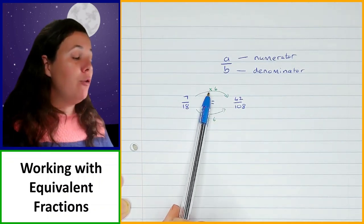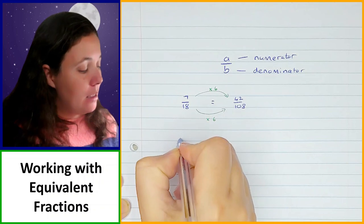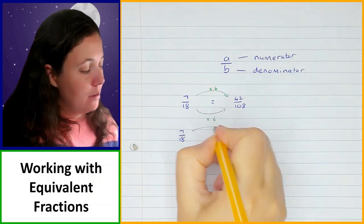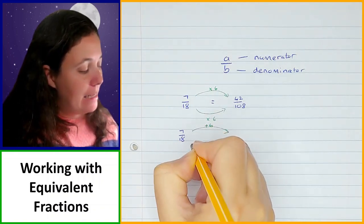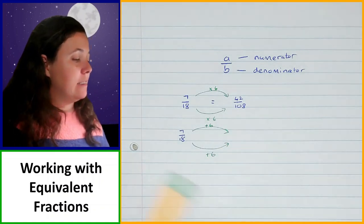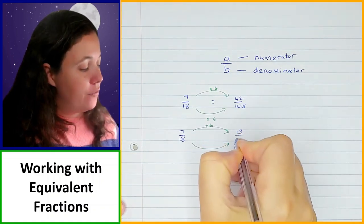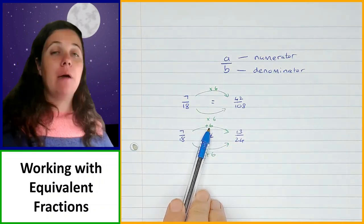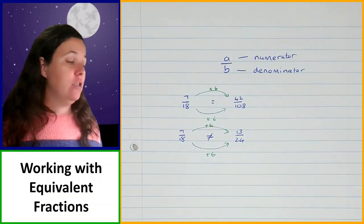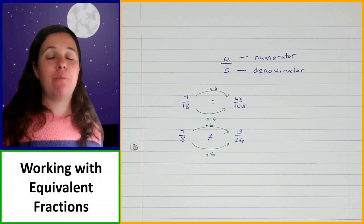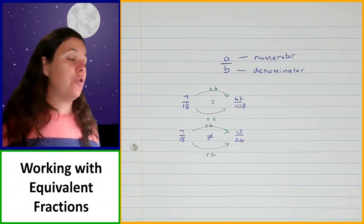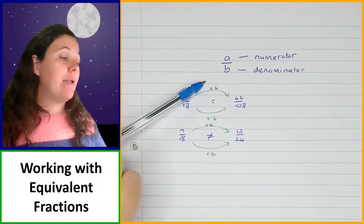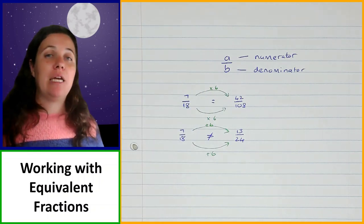Please be careful. If I were to add 6 to the top and add 6 to the bottom of 7 over 18, I get 13 over 24 — and these are not equal to each other. If you add the same thing or subtract the same thing at the top and bottom of the fraction, it will not give you an equivalent fraction.